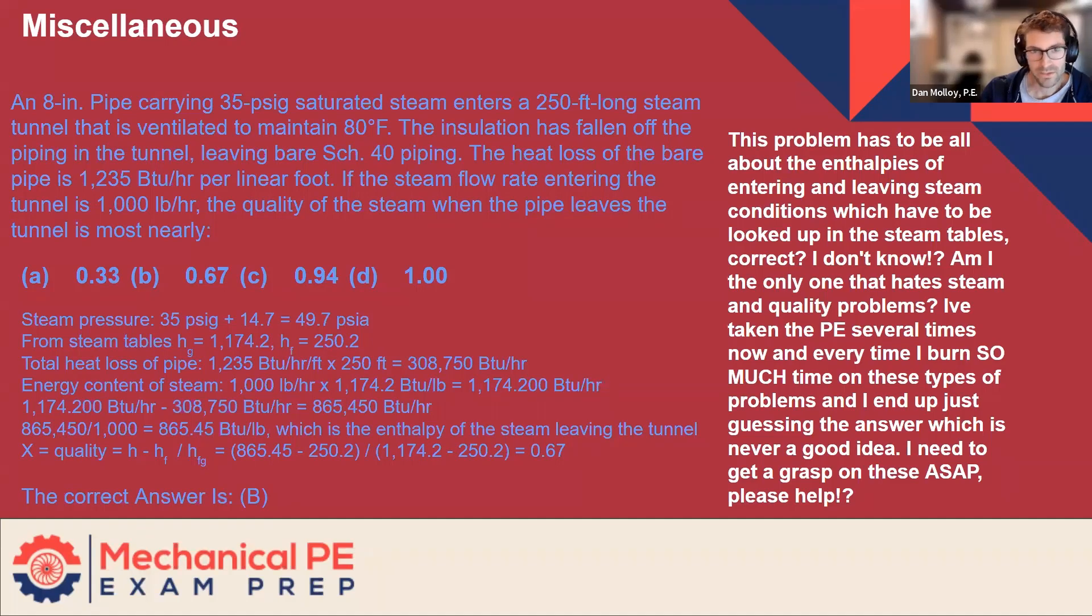Alright, let's just break it down. An 8-inch pipe carrying 35 PSIG saturated steam enters a 250-foot-long steam tunnel that is ventilated to maintain 80 degrees. The insulation has fallen off the piping in the tunnel, leaving bare Schedule 40 piping. The heat loss of the bare pipe is 1,235 BTU per hour per linear foot.